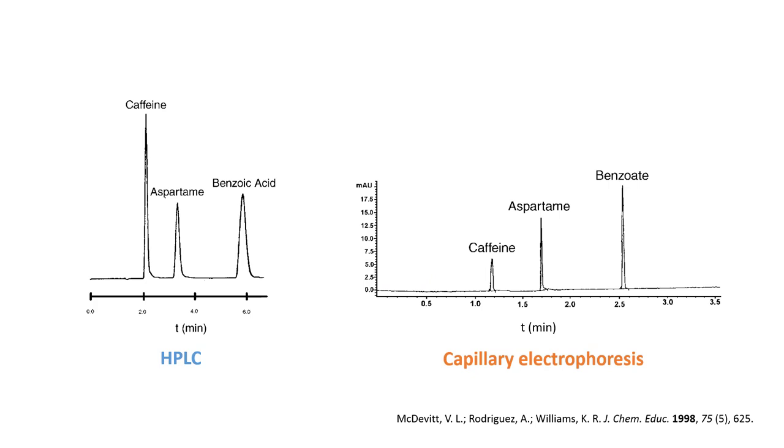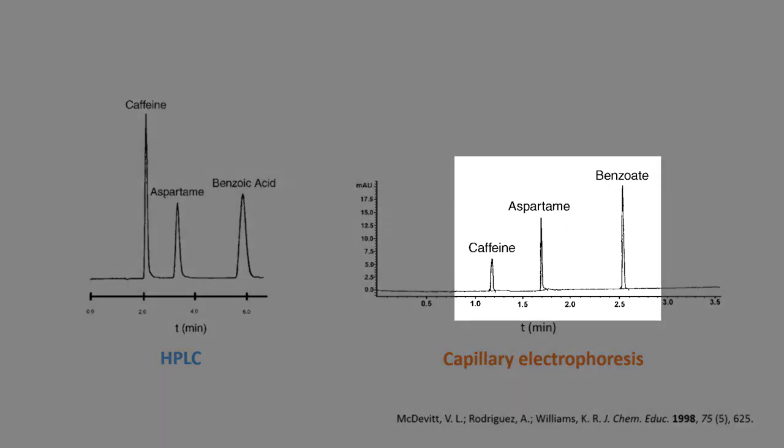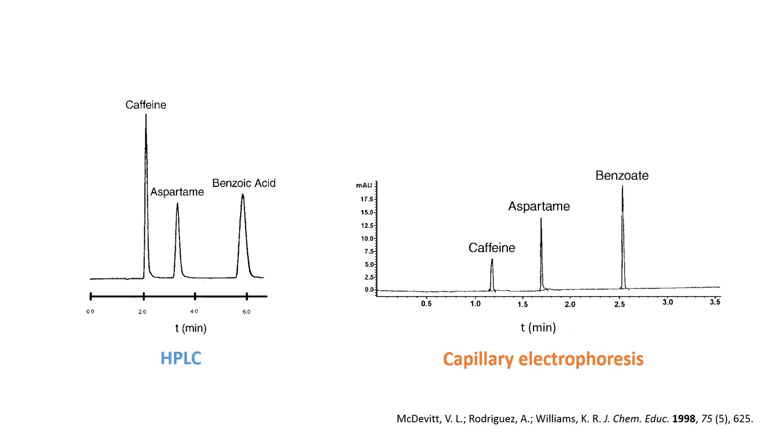First of all, we will notice that the peaks in CE are sharper as compared to those observed in HPLC. So what does it mean? The peak width is related to the number of theoretical plates, which tell us about how good the separation method is. The narrower the peak width is, the greater the number of theoretical plates, and the better the separation method is.